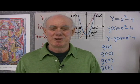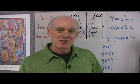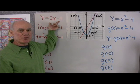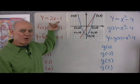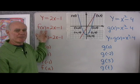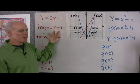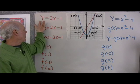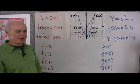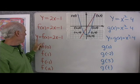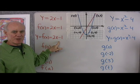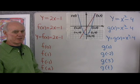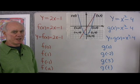We want to do a little bit of work with function notation. Over here on the board I've written this function: y equals 2x minus 1. I'm also calling it f of x equals 2x minus 1, so I can use function notation. y and f of x are exactly the same thing, so y equals f of x equals 2x minus 1. You'll see this function written any of these three ways.